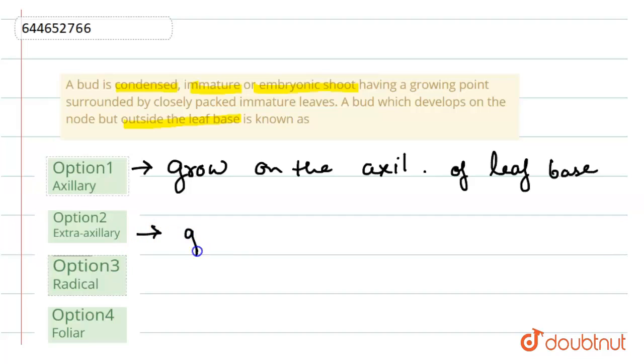those buds which grow on stem but outside the leaf base. So let's see the question - the node but outside the leaf base. So extra axillary are those buds which grow on stem but outside the leaf base.